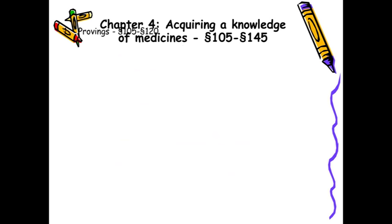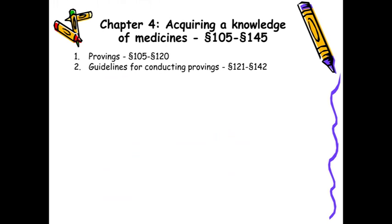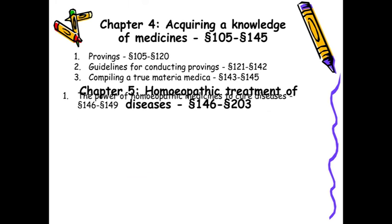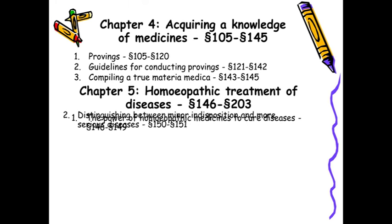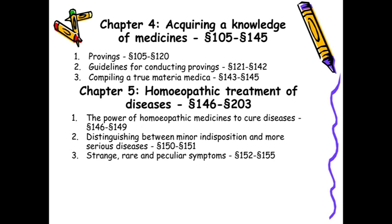The fourth and fifth chapters are 'Acquiring a Knowledge of Medicines' — that is drug proving — guidelines for conducting proving, and compiling a true materia medica. Then chapter 5 is homeopathic treatment of diseases; more than 50 aphorisms have been devoted to this — the power of homeopathic medicine to cure diseases. Then distinguishing between minor indispositions and more serious diseases, and aphorism 152 to 155 on TKRS — strange, rare and peculiar symptoms.